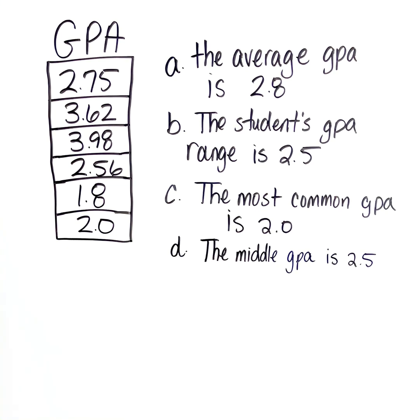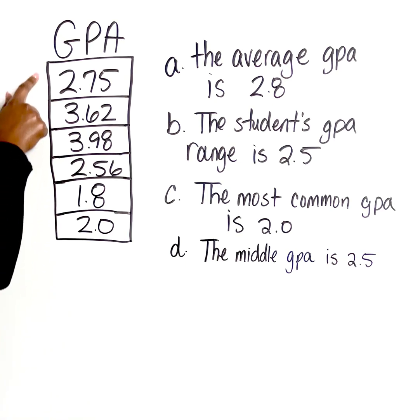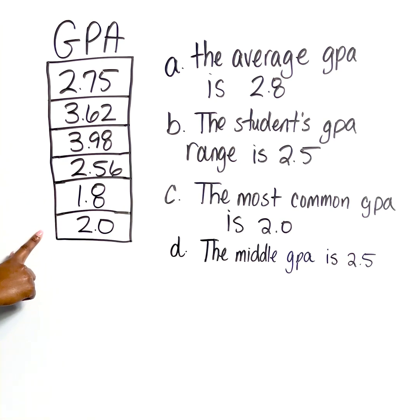Let's take a look at question number seven from practice one. The question says, what conclusion can be drawn from the data set? So if we look at our data set, we have a table that gives us a few different GPAs, and we need to decide which one of these particular conclusions is true in reference to our data set. So let's go through the conclusions to see what they're actually asking us to look for.